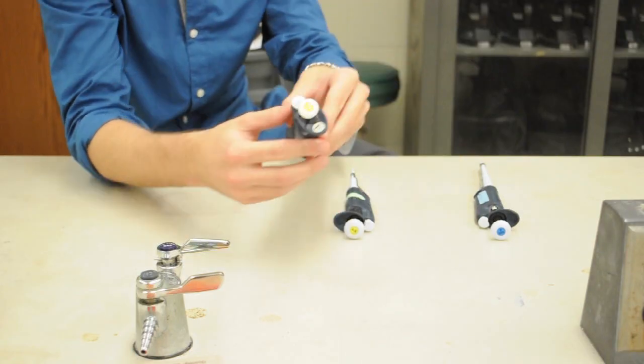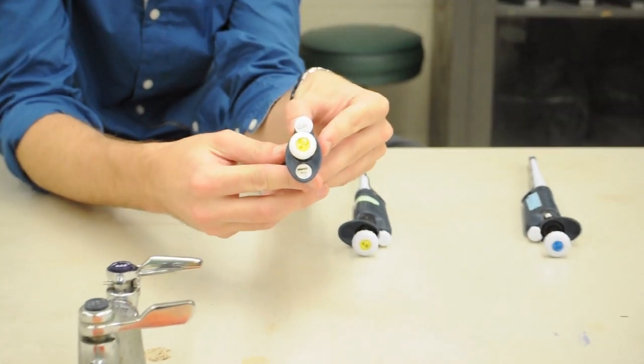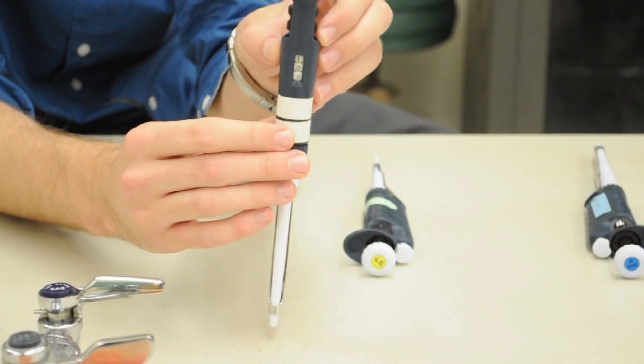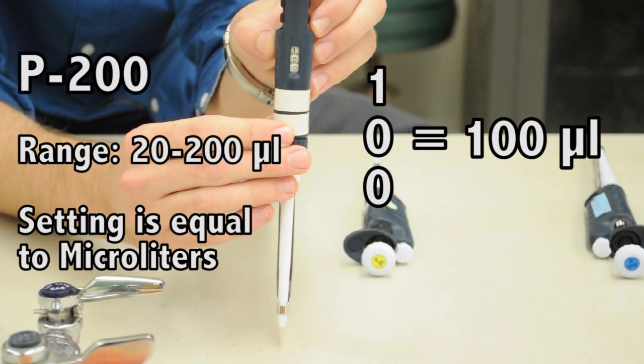For the P200, the effective range is 20 to 200 microliters. And the 3 digit number that you see correlates to the actual number of microliters that you'll be drawing and dispensing.